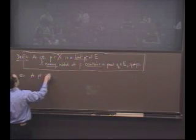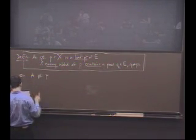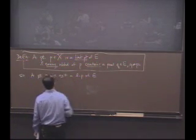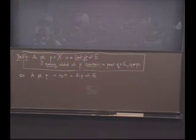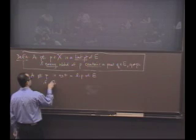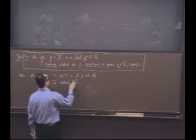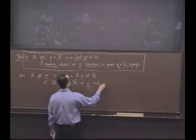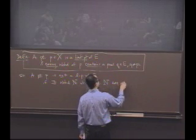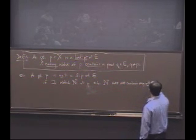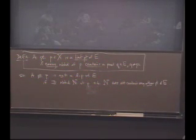So let's say a point P is not a limit point of E. What does that mean? Go ahead. Yeah, so Rebecca's saying if there exists a neighborhood N of P, such that what? Any, I'll just say it this way, any other points of E. Everybody happy with that?